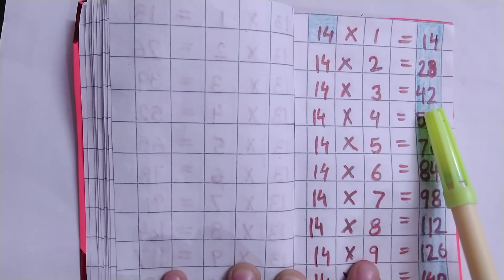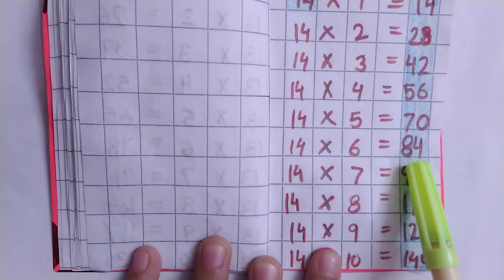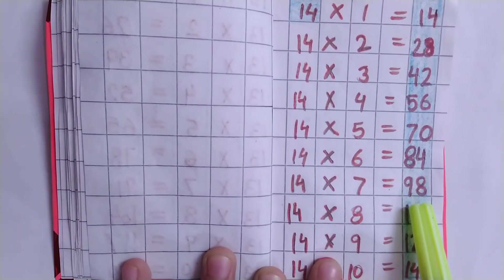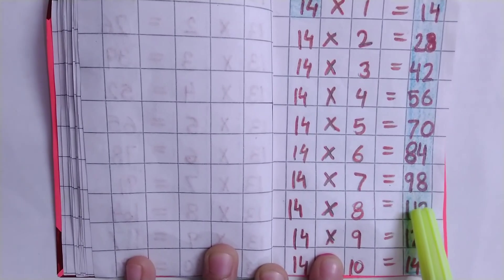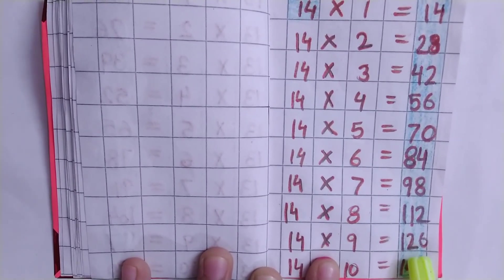Table of 14: 14×3=42, 14×4=56, 14×5=70, 14×6=84, 14×7=98, 14×8=112, 14×9=126, 14×10=140.